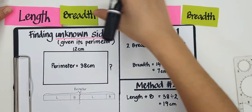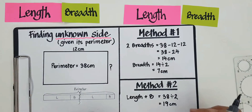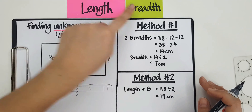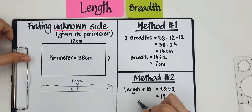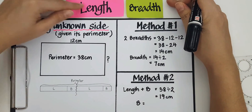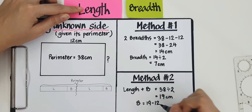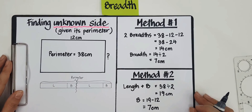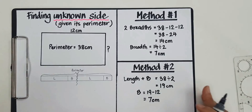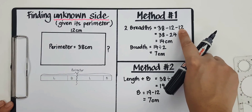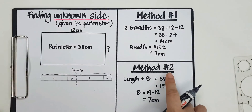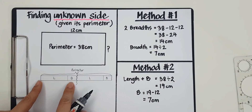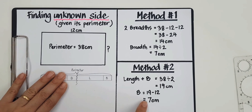So if I have this as 19, how do I find the breadth? I know the length is 12. So the breadth would be — if the whole thing is 19, I'm going to take away 12, taking away the length, which will leave me with the breadth, which is also 7 centimeters. These are the two different ways to do it. In the first method, we took away the two lengths that we knew. In the second method, we cut the parameter into half and one half would be a length and a breadth.